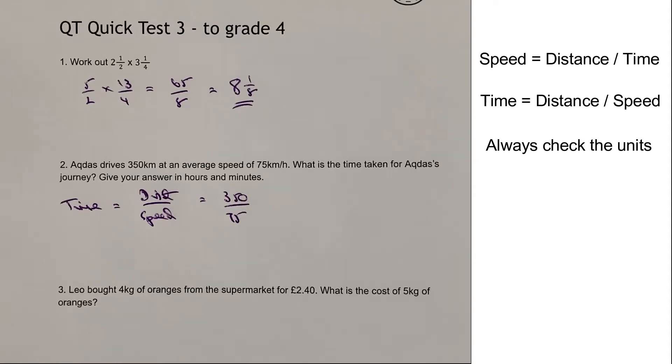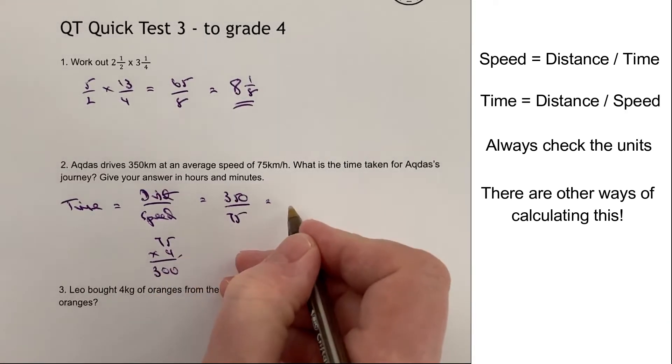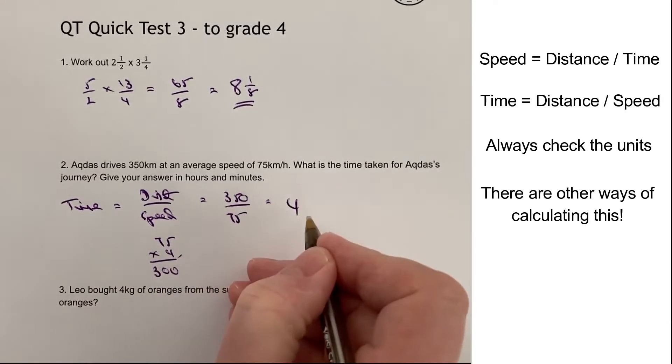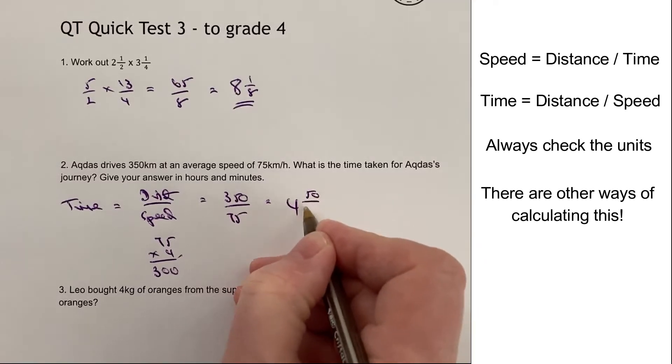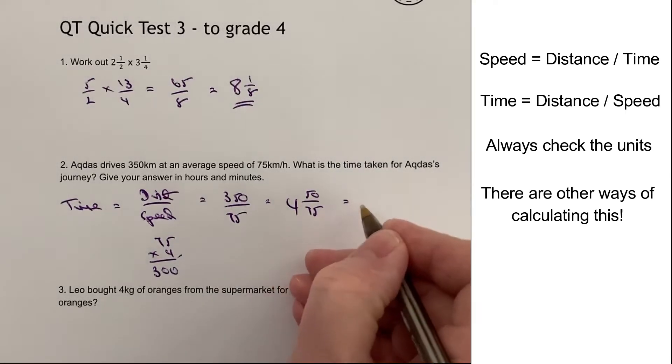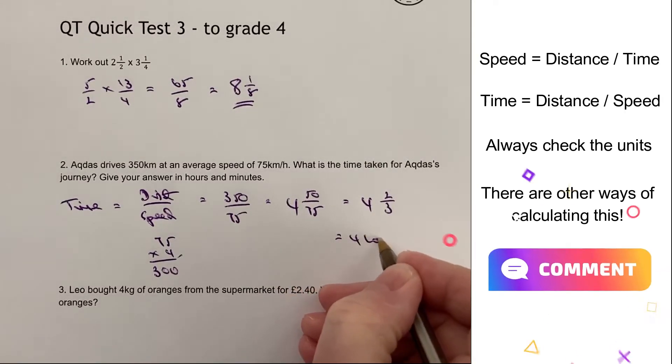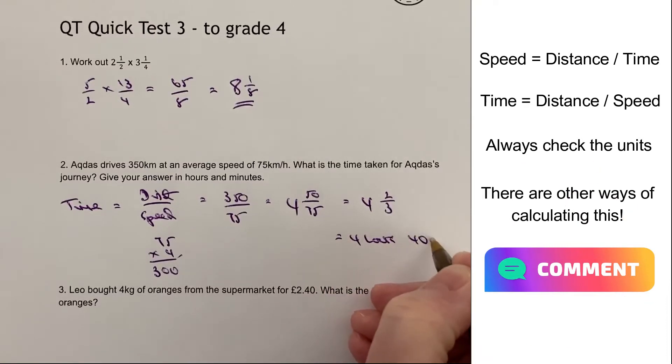So really the job is to know 350 divided by 75. Well, what I could do, just to the side here, is if I do 75 times 4, what I'm actually going to get is 300. So what I've got really is 4 wholes and then 50 over 75 left. Now, that 50 over 75 will convert itself to two-thirds. So we're looking at 4 hours and two-thirds of an hour. And two-thirds of an hour is actually 40 minutes. So the answer would be 4 hours and 40 minutes.